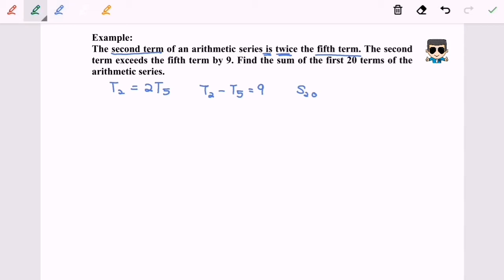Now we expand the equation. T2 is a plus d, which equals 2 bracket the fifth term, a plus 4d. Expanding, we have a plus d equals 2a plus 8d. Simplifying, we get a plus 7d equals 0. This is the first equation.